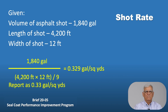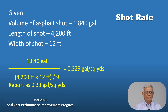Here's an example: the volume of asphalt determined from the strap was 1,840 gallons for a particular shot. The length of the shot was 4,200 feet and the width was 12 feet. Taking 1,840 gallons divided by 4,200 feet times 12 feet, divided by 9 to convert to square yards, gives 0.329 gallons per square yard. Conventionally in the field, this is reported as 0.33 gallons per square yard.